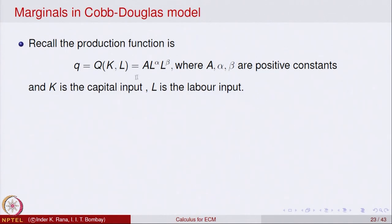Recall that the production function in the Cobb-Douglas model is given by Q, which is a function of two variables K and L, where K is the capital input and L is the labour input. It is given by Q = A · L^α · K^β, where A, α, and β are positive constants.